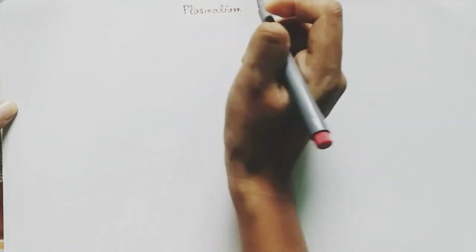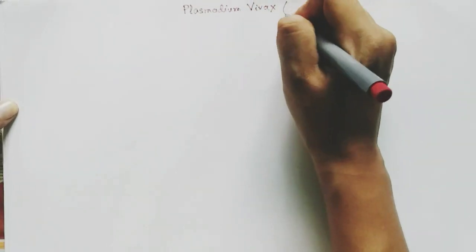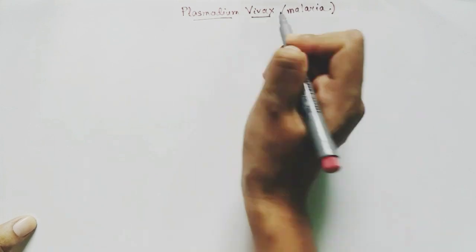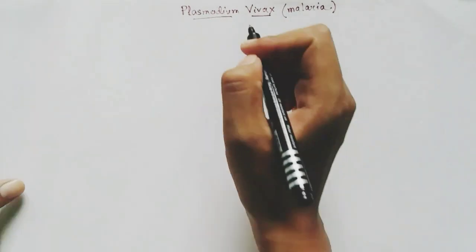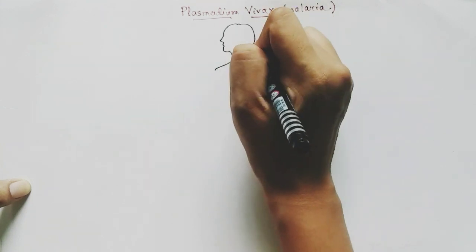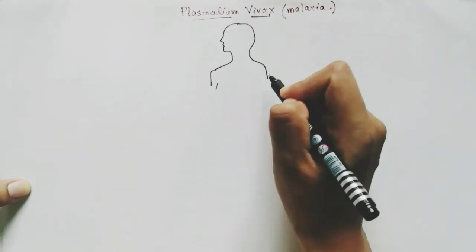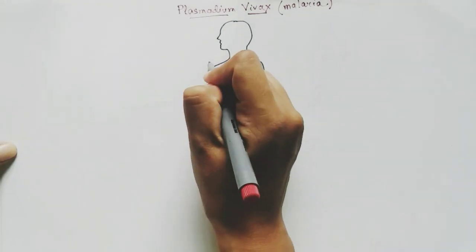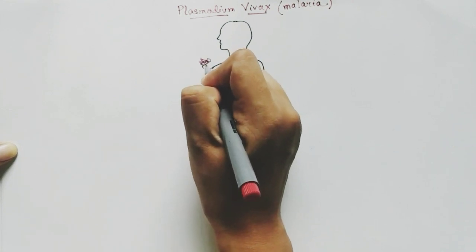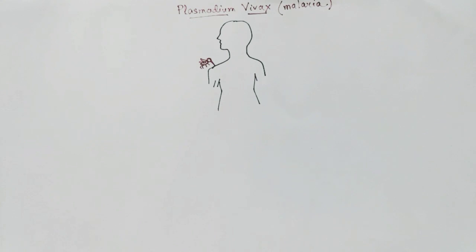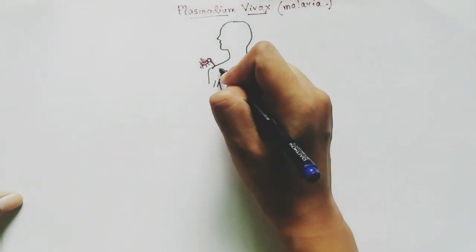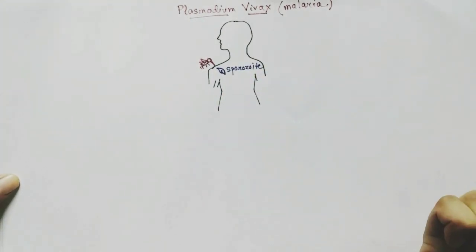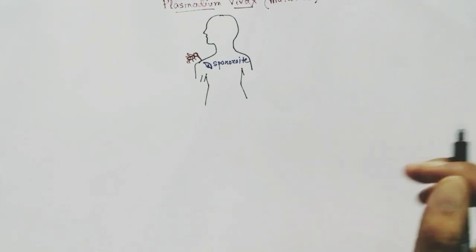Today we are talking about Plasmodium vivax, which is a parasitic protozoa that causes malaria disease in humans. Malaria disease is caused by Plasmodium vivax, which is carried by a vector — the Anopheles female mosquito. When an Anopheles female mosquito carrying this protozoa bites a healthy human, it inserts the sporozoites of Plasmodium vivax.